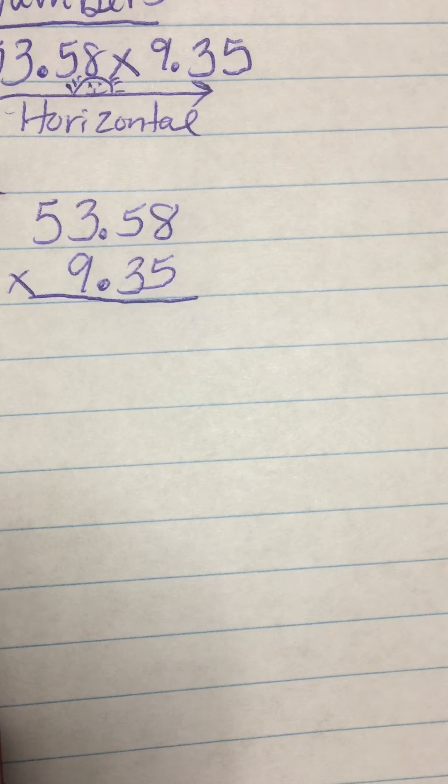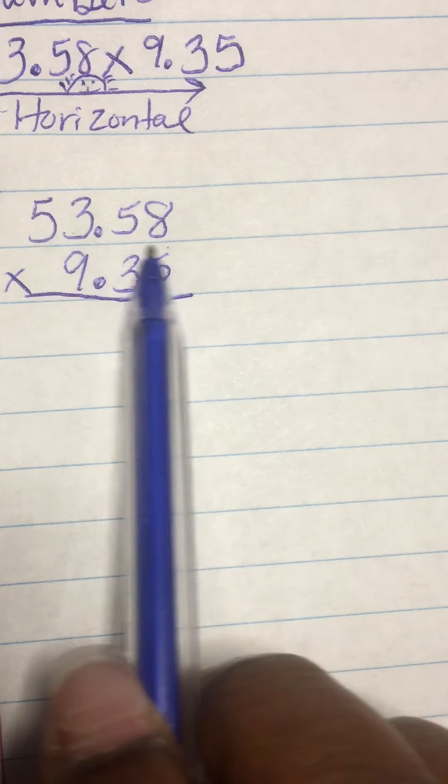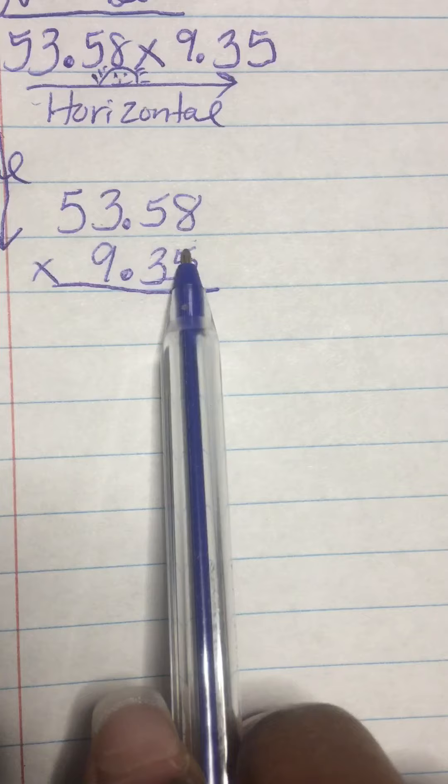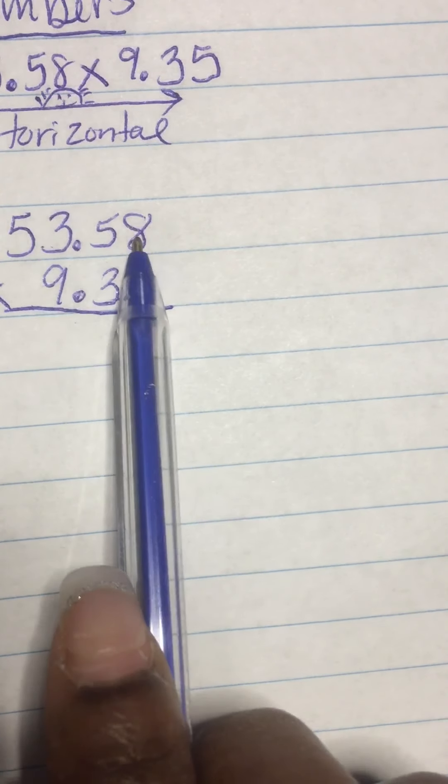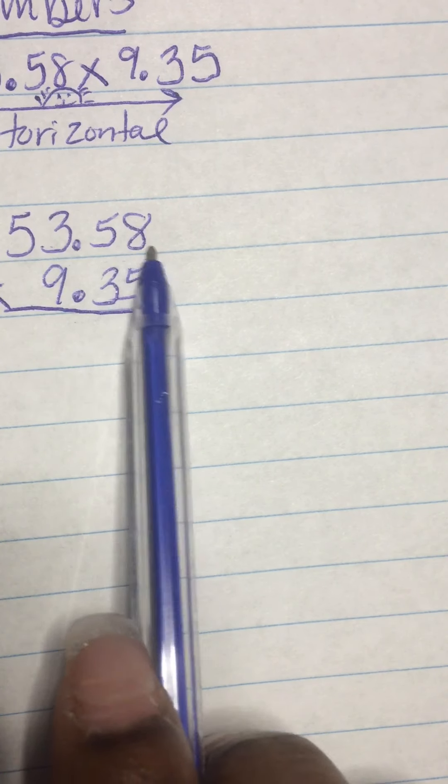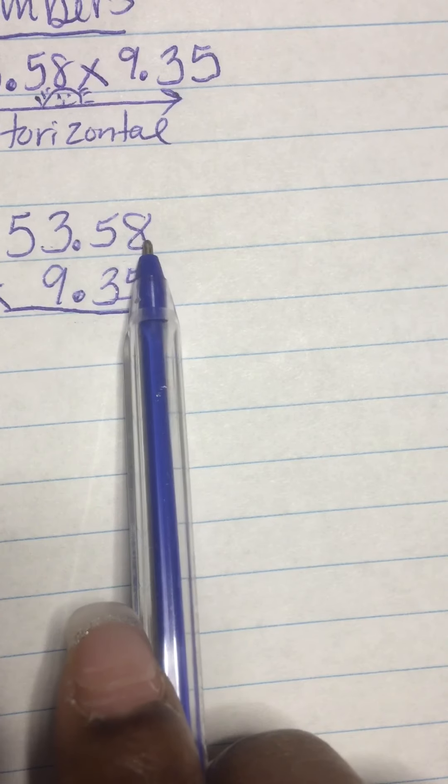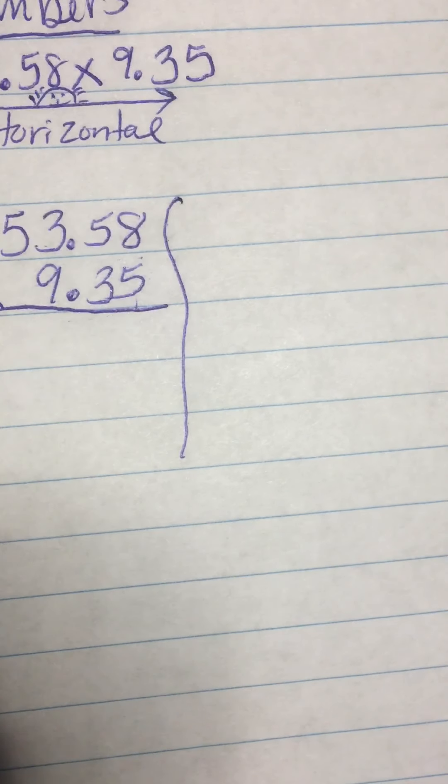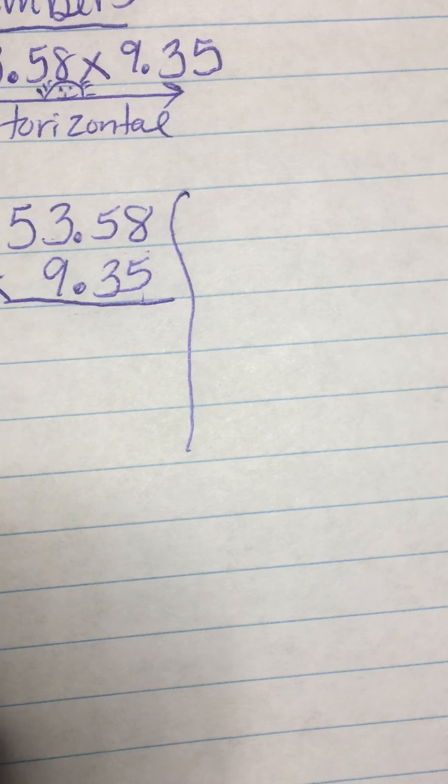Now, we are going to separate these numbers so it's easier for us to multiply. If there are three numbers down here, you're going to write 53.58 three times. If there are two numbers down here, you're going to write 53.58 twice. If there's one number, then you just write 53.58 one time. Since there's three numbers here, I'm going to write 53.58 three times.